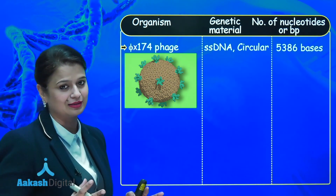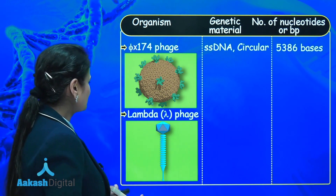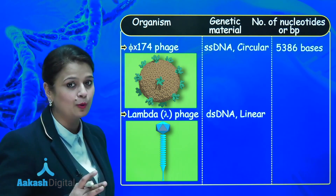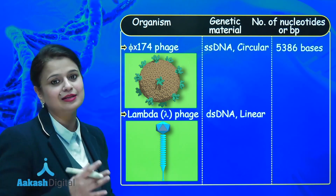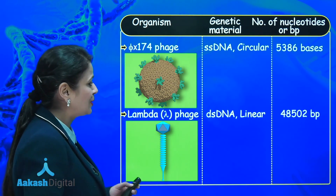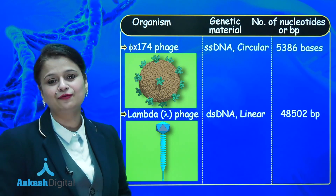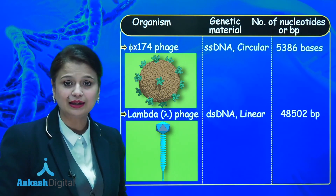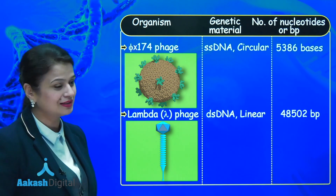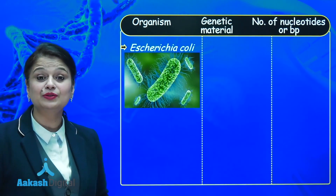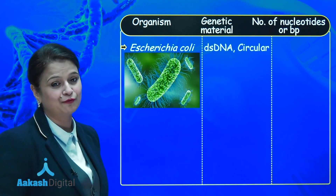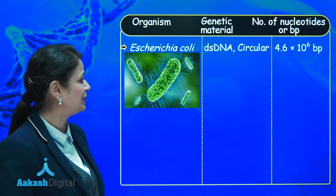Next is lambda phage. In lambda phage there is double-stranded DNA, and it is linear — just like in eukaryotes. Because double-stranded condition is present, we write 48,502 base pairs. Next, the most studied bacterium — E. coli — also has double-stranded DNA, but it is circular, with 4.6 × 10⁶ base pairs.